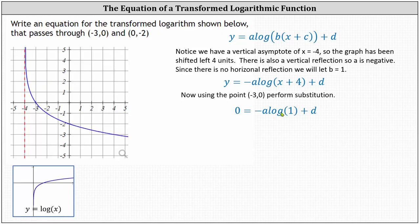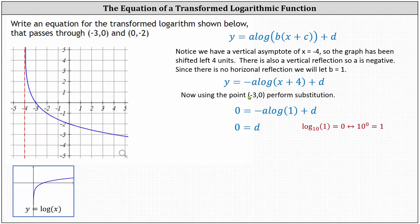Performing the substitution, we have zero equals negative a times common log of one, plus d. Recall common log one is equal to zero — a logarithm is an exponent. Common log is log base 10, and because 10 to the power of zero is equal to one, common log of one is zero. This gives us d equals zero, which means our equation is in the form y equals negative a times common log of the quantity x plus four.